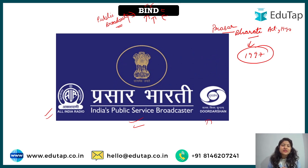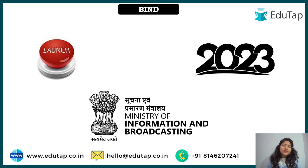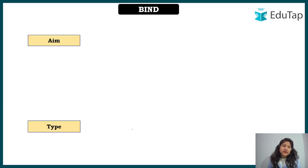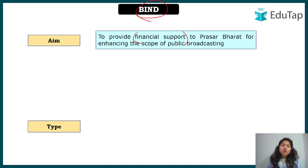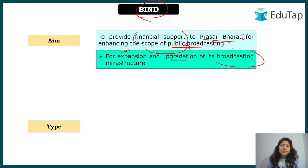The BIND scheme is about infrastructure and network development — broadening the horizon of Prasar Bharati. More studios, more networks, and more towers can be established so that these two platforms can reach more people in remote areas as well. The scheme was launched in 2023 under the Ministry of Information and Broadcasting. The aim of the BIND scheme is to provide financial support to Prasar Bharati for enhancing the scope of public broadcasting in India.